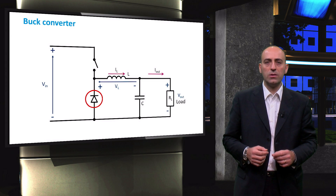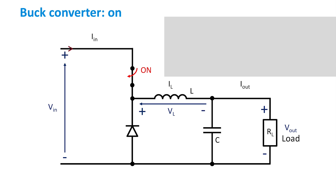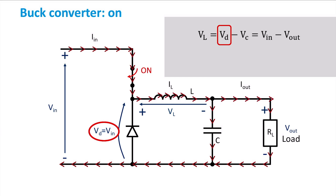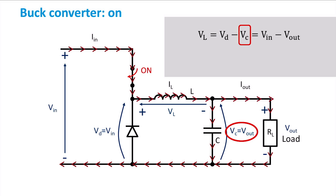Let's start with the case when the switch is on. The current flows through the switch, the inductor, and then divides itself among the load and the capacitor branch. By applying Kirchhoff's law for a linear circuit, we can find that the voltage across the inductor is given by the voltage across the flyback diode — which is the same as the input voltage — minus the voltage across the capacitor, which in turn equals the output or load voltage.